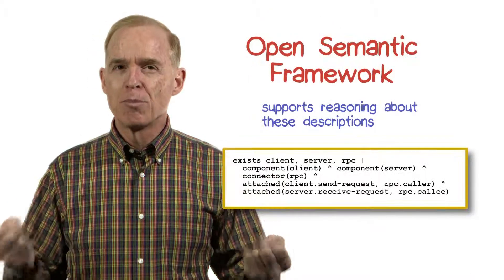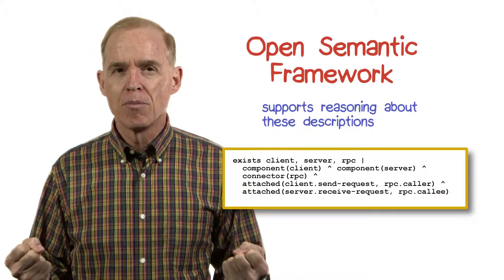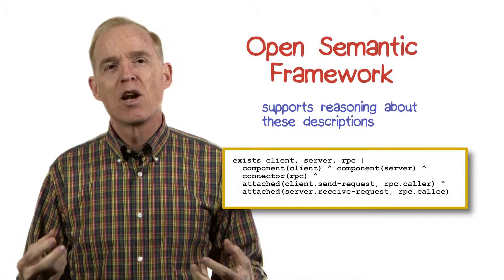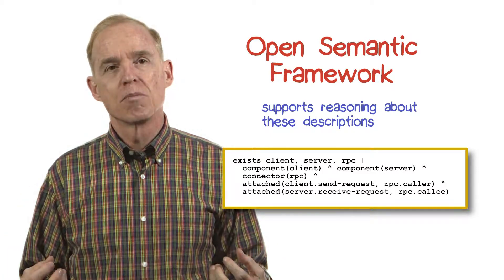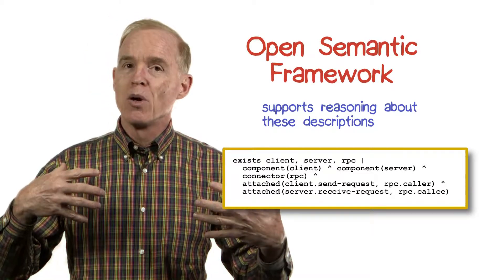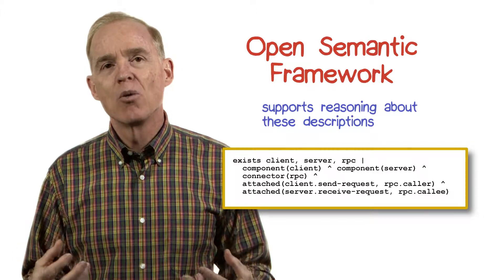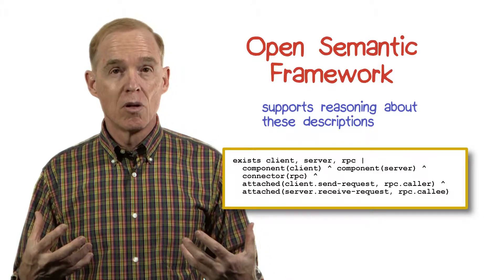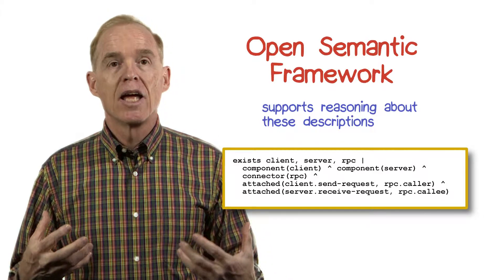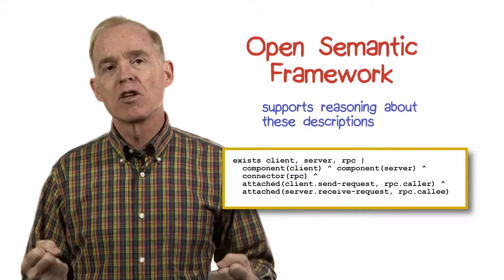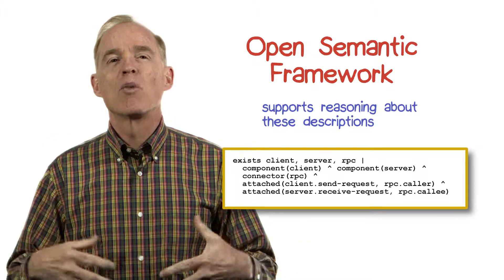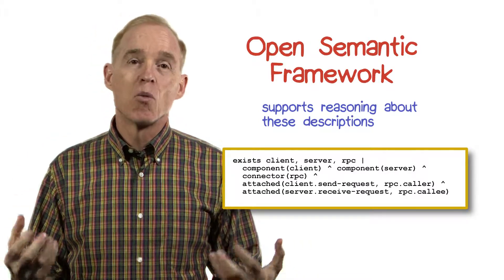The third advanced feature of Acme is what's called its Open Semantic Framework. Acme has a simple vocabulary, a simple syntax, and also a very simple semantics. But there obviously could be lots of information you'd like to encode in an architectural description, and encoding all that complexity, you would also like to have some way of checking it for whether it's valid.